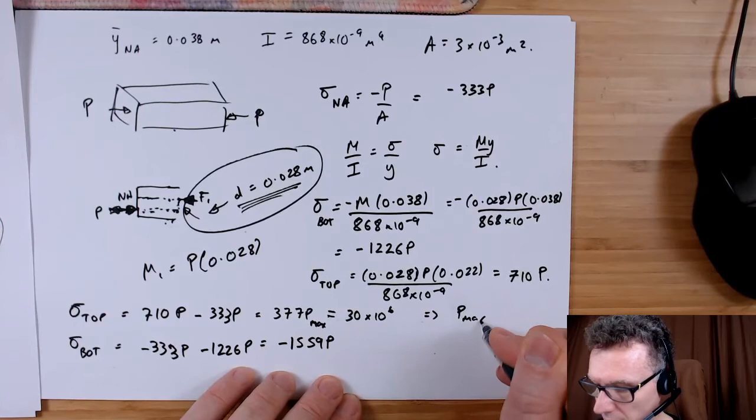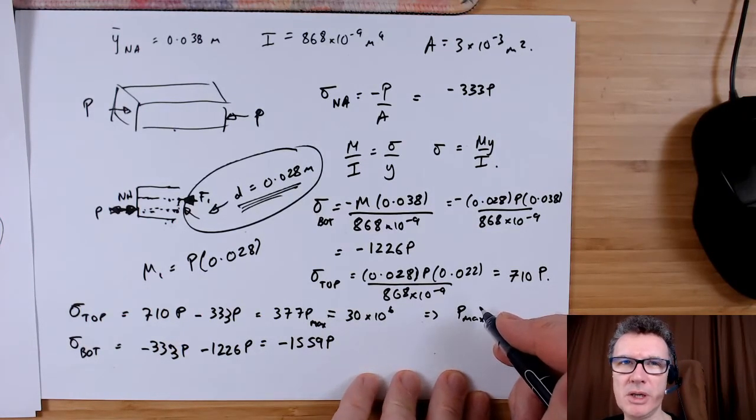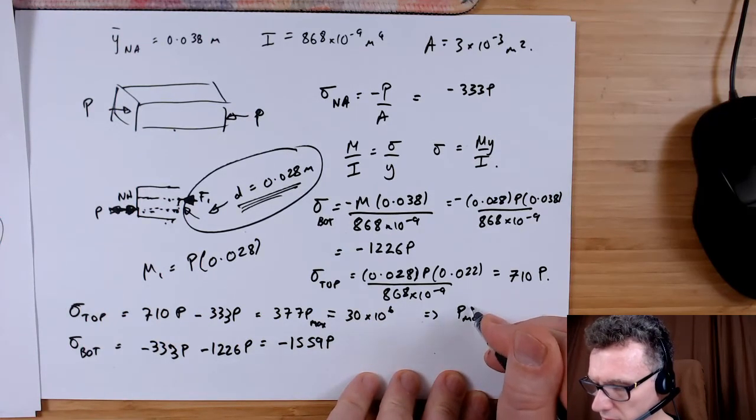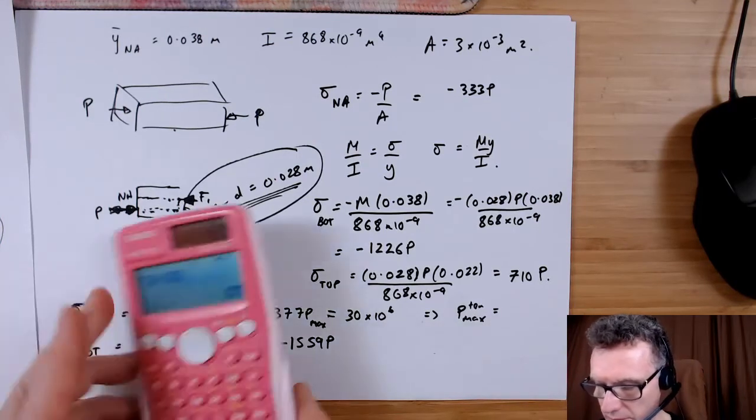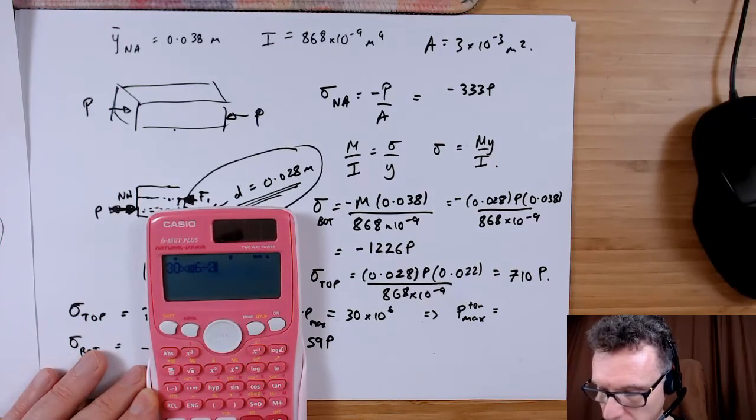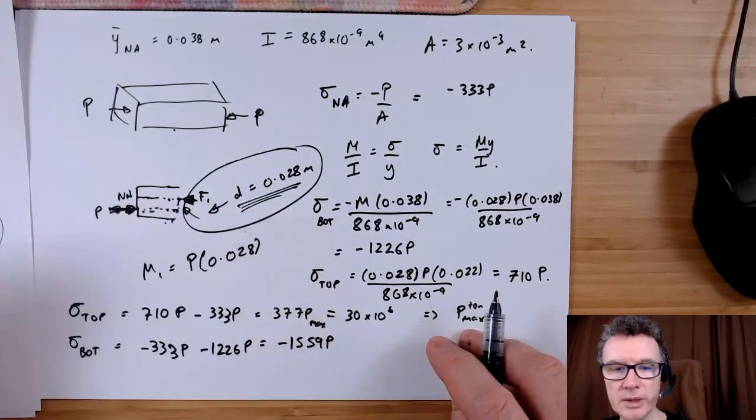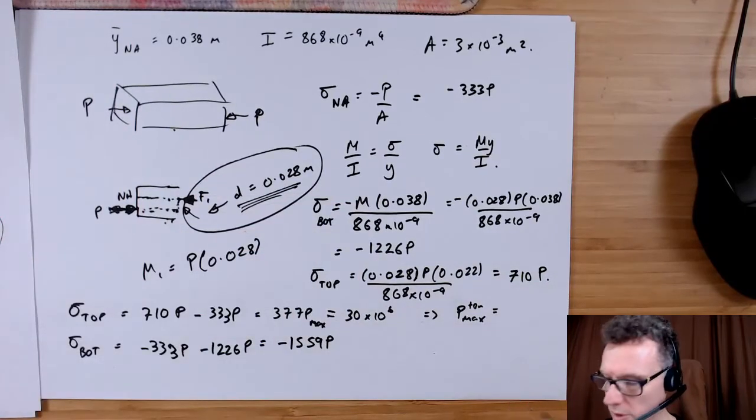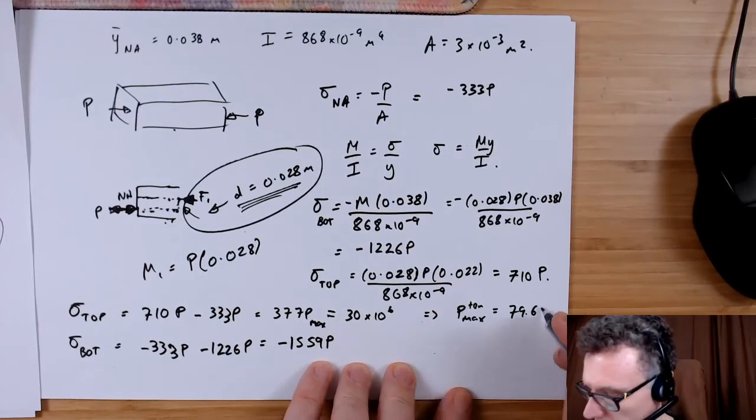Therefore P max, I don't know whether I want to really particularly call this anything, so P max due to the tension if you like is going to be 30 divided by 377. Right, so that gives me 79.6 kilonewtons.